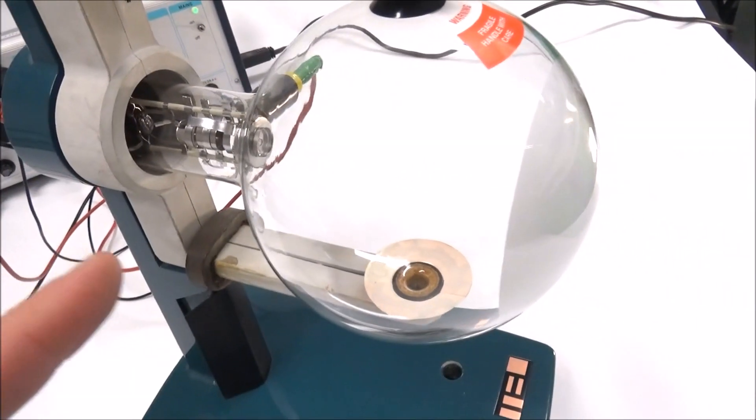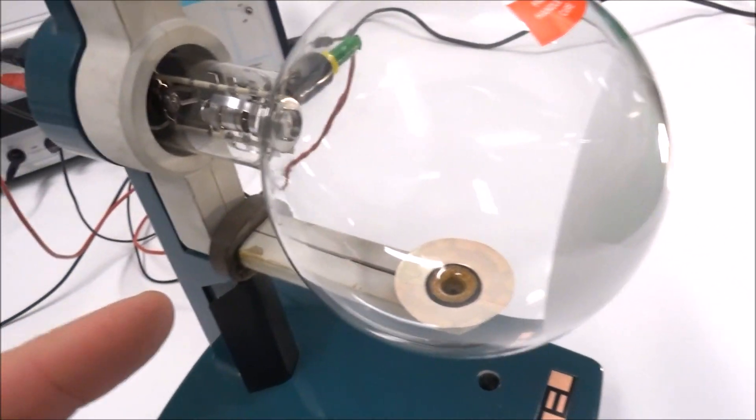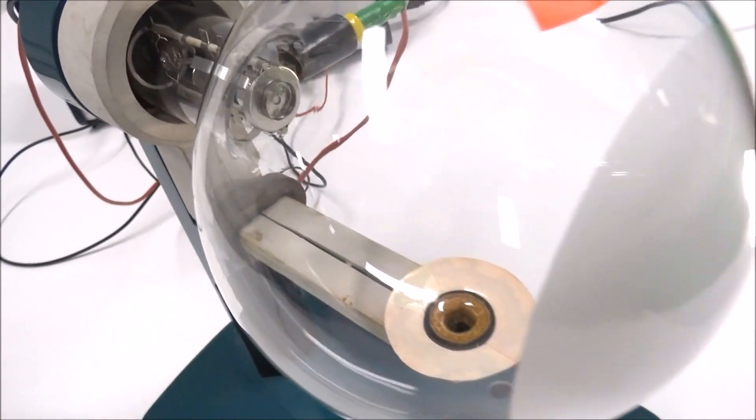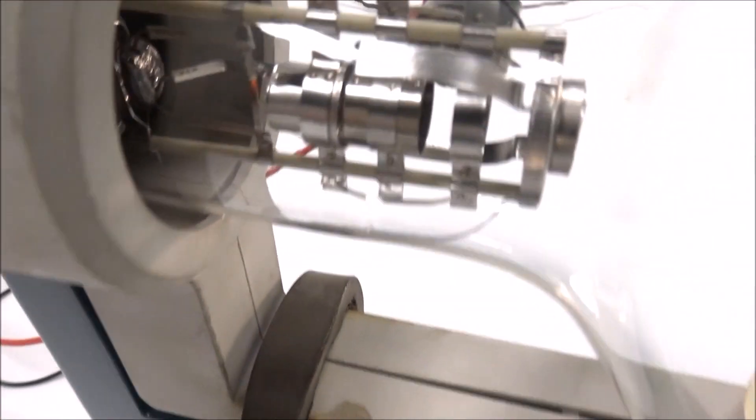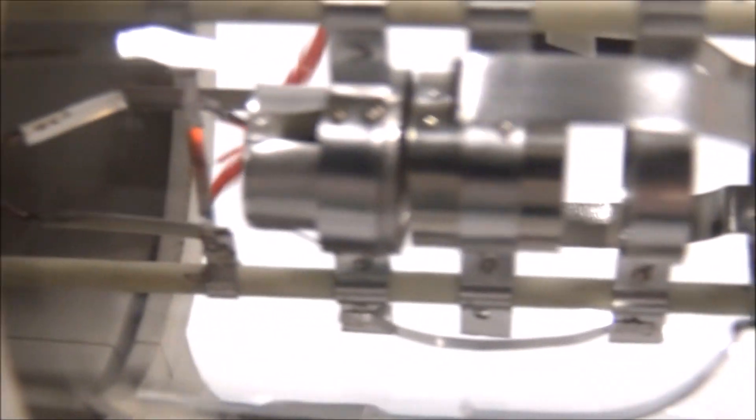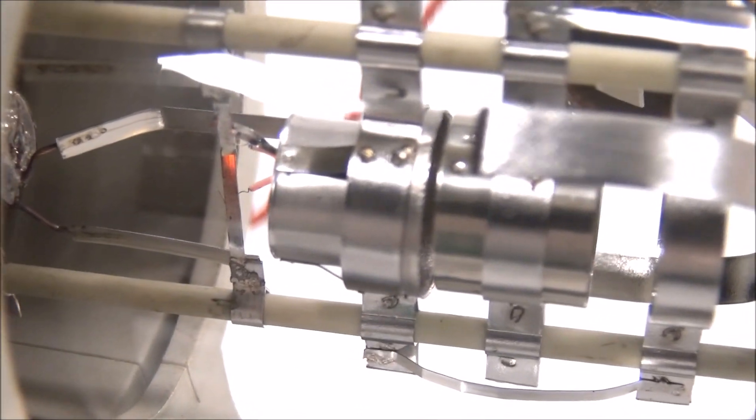We then have a very delicate glass tube. These cost about 700 pounds. At the back we have a spot which you can just about see is glowing, and here we have the thermionic emission of electrons.